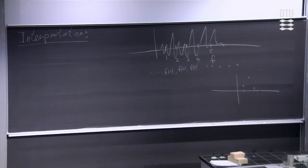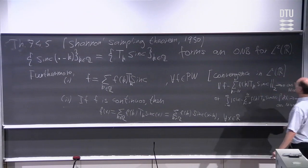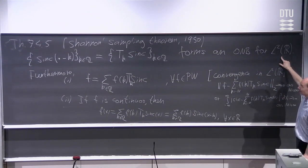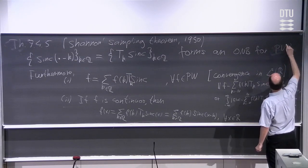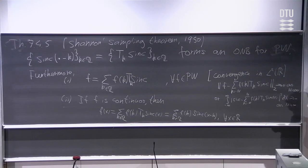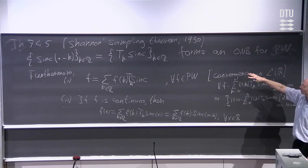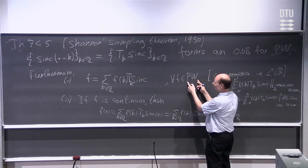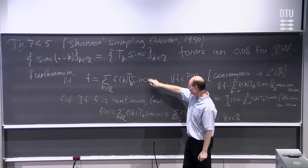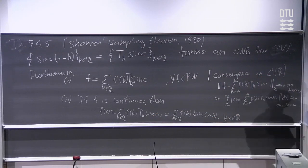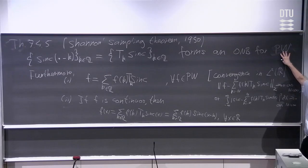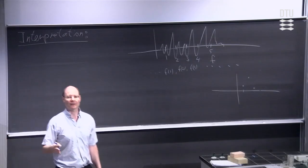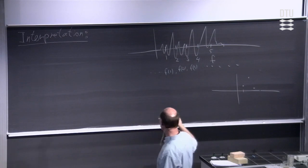How come that if you just know f(1), f(2), f(3), and so on, we can reconstruct all values f(x)? This is because of the assumption that f belongs to PW. We are speaking about the space PW, and for functions in this space we have an orthonormal basis. When we take functions in PW, they have this representation. The reason it is enough to know the values f(1), f(2), f(3) is that the assumption of a function sitting in PW is very strong. Because of this assumption we can reconstruct all the function values. Without the assumption that f is in PW, we would have no chance.